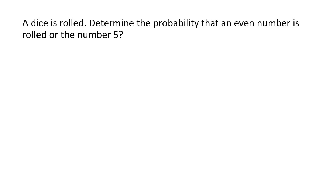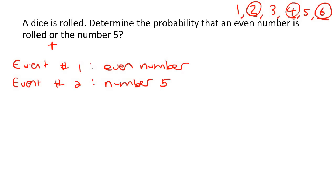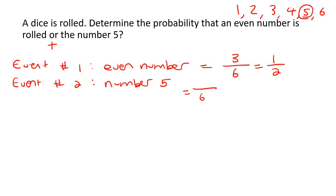A dice is rolled. Determine the probability that an even number is rolled or the number 5 is rolled. Event number one is to roll an even number. You could roll 1, 2, 3, 4, 5, or 6 — the even numbers are 2, 4, 6, so that's 3 out of 6, which simplifies to a half. Event number two is to roll the number 5 — there's one five, so 1 out of 6. Because they're using 'or', add them together: 1/2 + 1/6 = 2 out of 3.